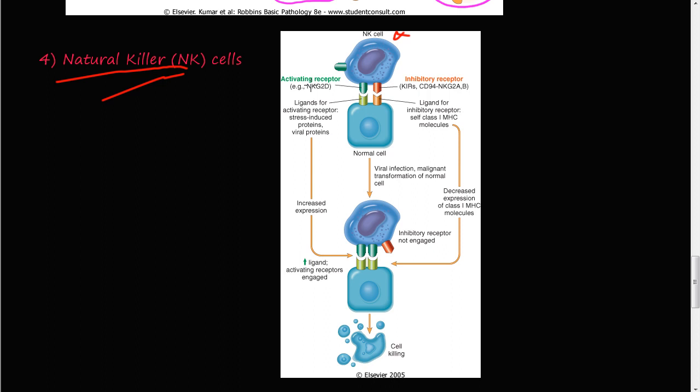In the natural killer cell you have an activating receptor, which is this receptor here, and you have an inhibitory receptor. One of the best known activating receptors is the NKG2D receptor, and the inhibitory is these ones over here.